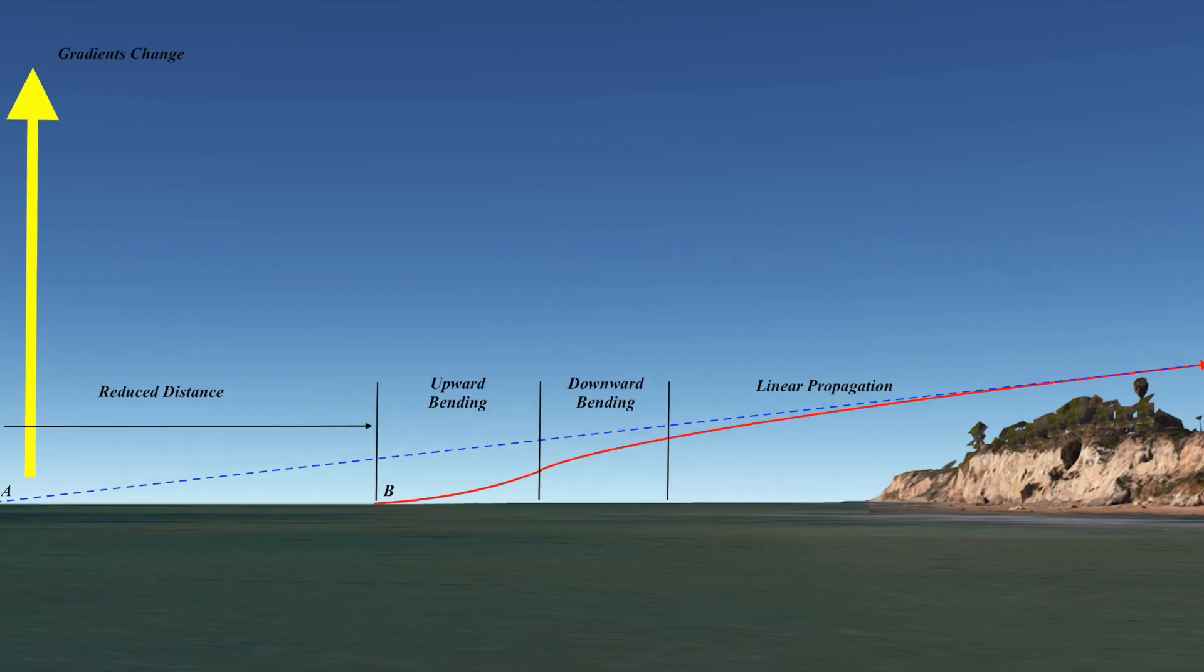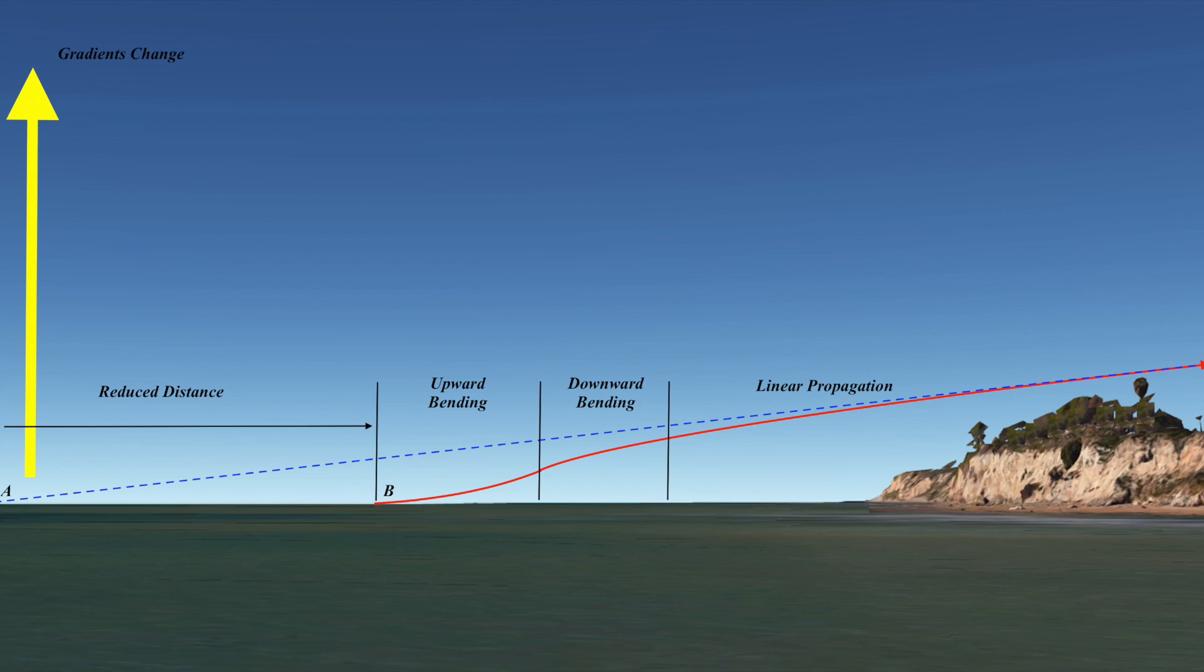But let's see what this means to the range of observation. Now notice what's going on here because of this bending. Look at the blue dotted line. We should have seen point A out there, but instead we're seeing point B, which is much closer to us.